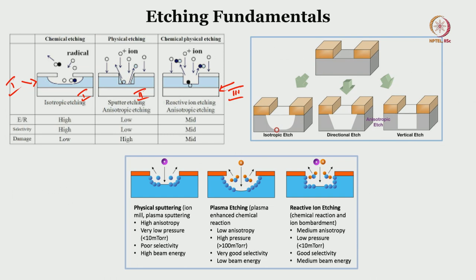Chemical etching can be directional or vertical (anisotropic). Physical sputtering, plasma etching, and reactive ion etching are all dry etching techniques. When you use chemicals it becomes wet etching. For wet etching of silicon there are two options: TMAH (tetramethyl ammonium hydroxide), used at room temperature but is neurotoxic, and KOH (potassium hydroxide), used at 80 degrees centigrade. KOH gives smooth walls while TMAH gives rough walls.